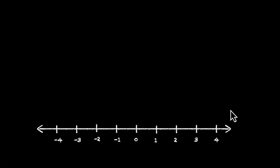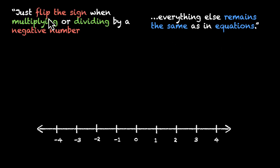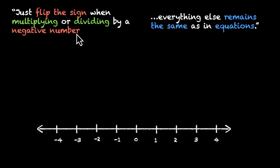In this video, we'll discuss some rules for solving inequalities. The most important thing to know is this: everything else remains the same as in equations. Just flip the sign when multiplying or dividing by a negative number. Whatever you've been doing for equations remains the same for inequalities. All we need to do is be careful about multiplying and dividing by a negative number — whenever there's a negative number, we flip the sign.